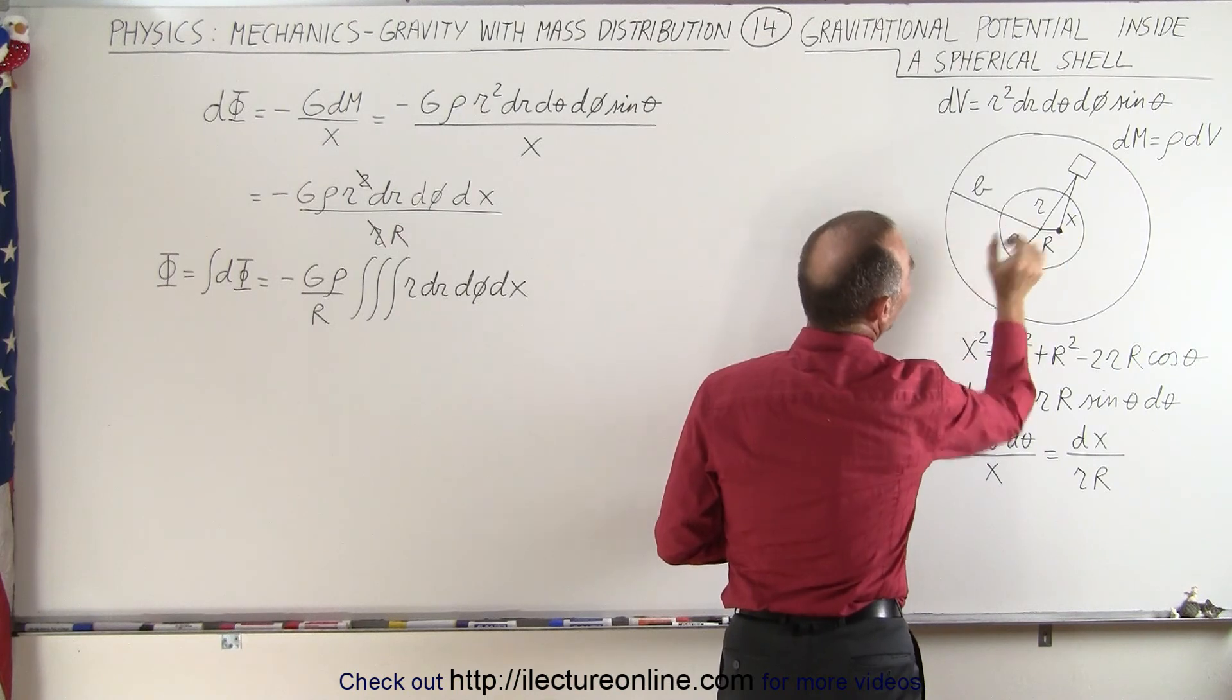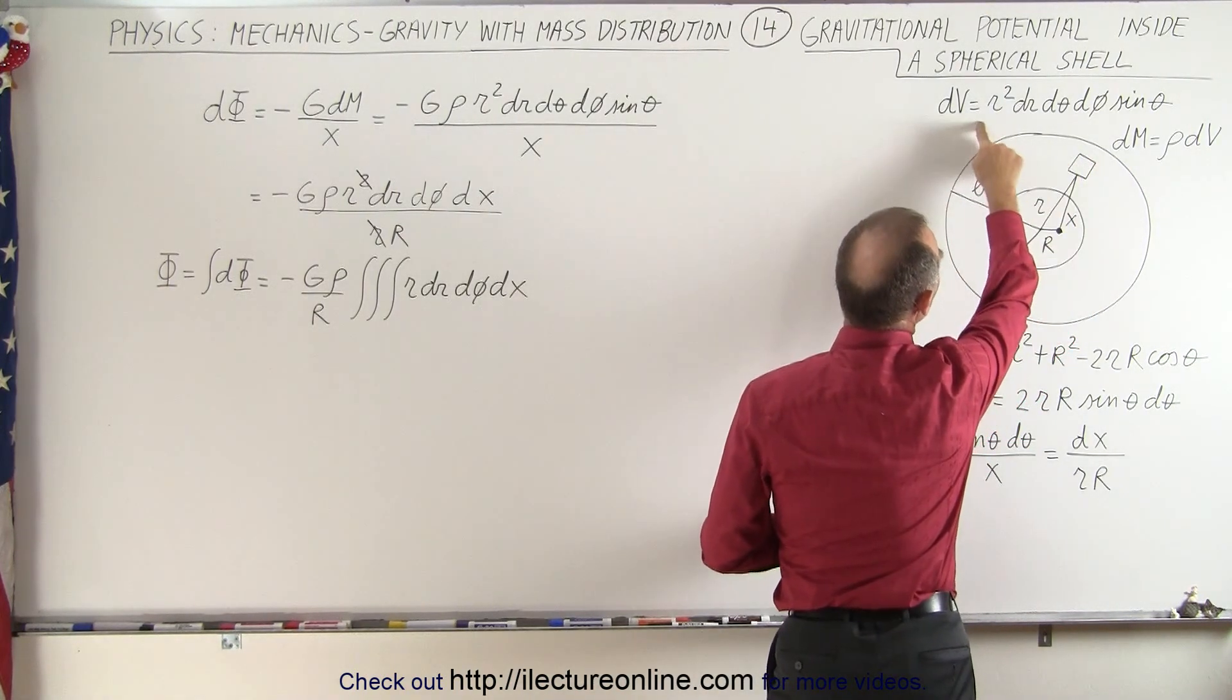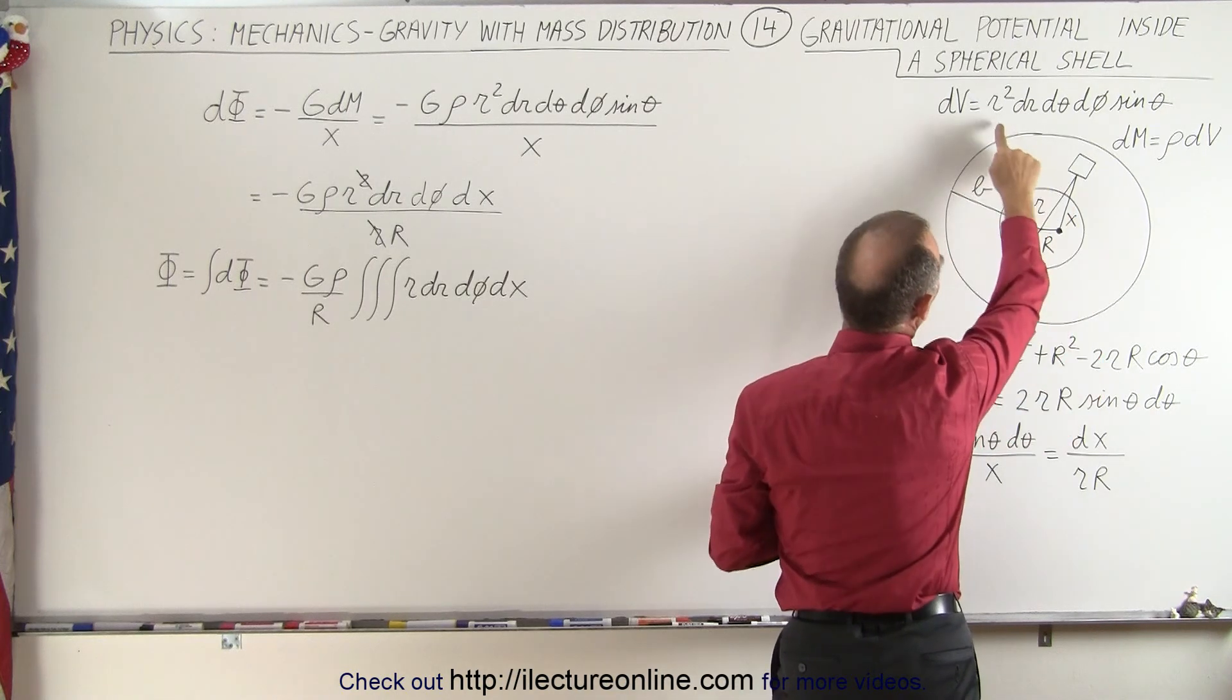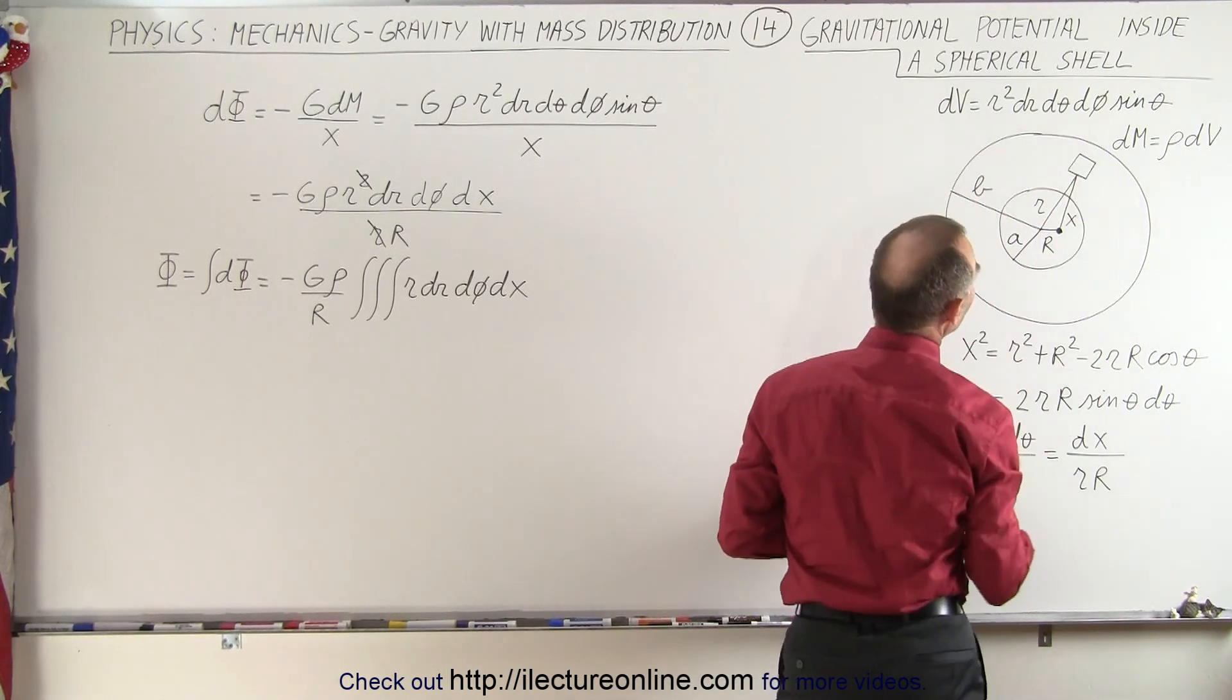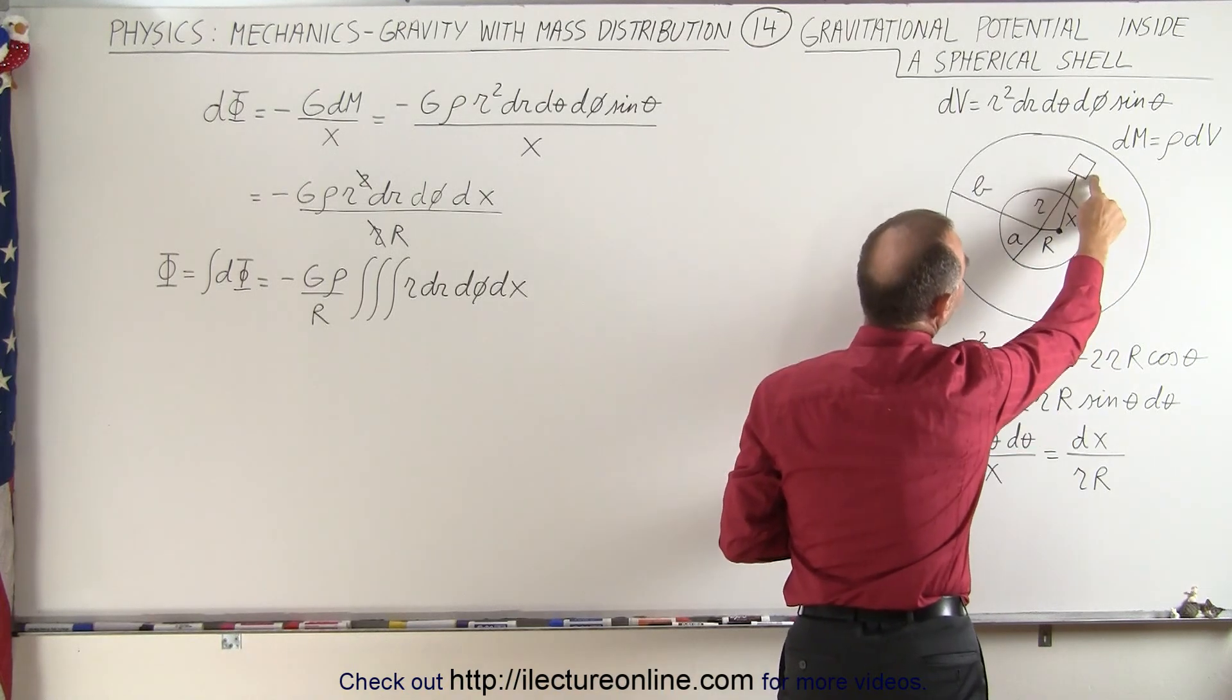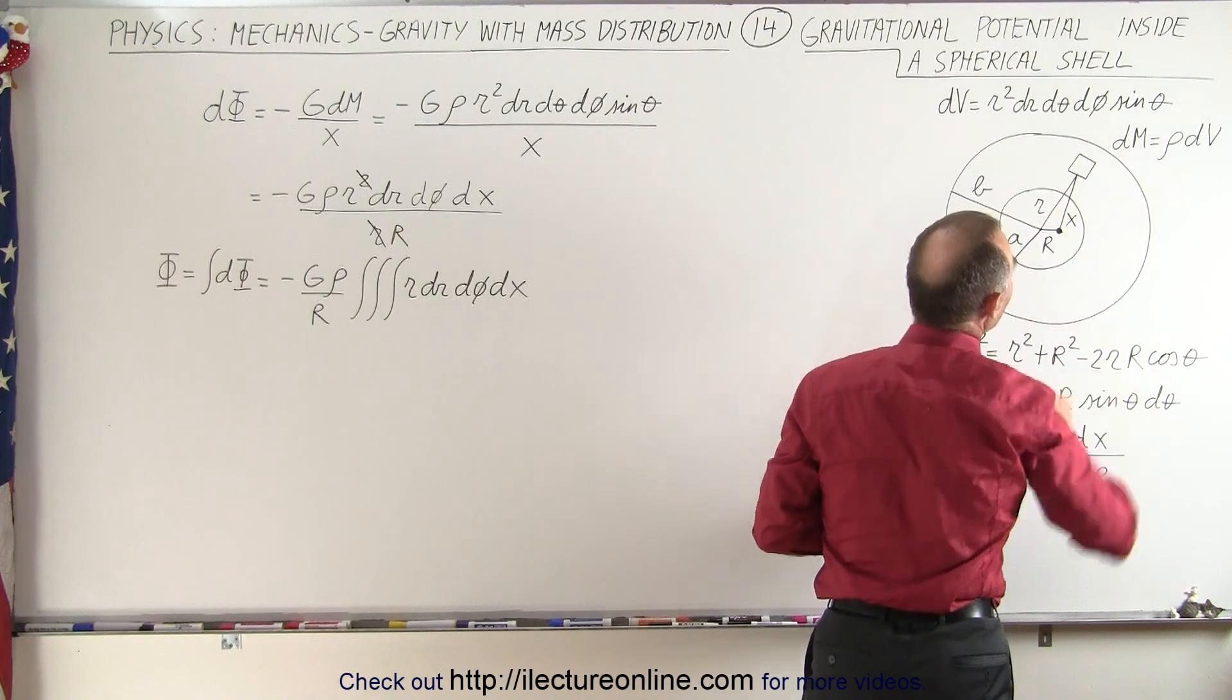a distance r away from the center. We have a volume element dV and since we're in spherical coordinates we define that as r squared dr d theta d phi times the sine of theta, and the mass dm is simply equal to the density of the material times dV.